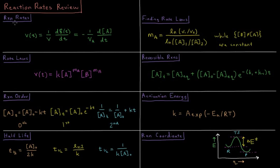We start by defining reaction rates, that the rate of a reaction as a function of time is equal to the inverse of the volume times the partial derivative of the extent of reaction with respect to time, which is going to be equal to, for some reactant, minus 1 over its stoichiometric coefficient times the derivative of its concentration with respect to time.